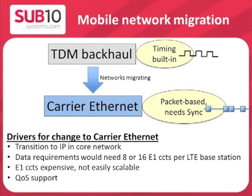There is a trend whereby TDM backhaul is migrating to carrier Ethernet. Traditionally, microwave backhaul used TDM circuits such as E1 or T1. These circuits carry a native clock signal along with the data, so timing is already available. Backhaul networks are now migrating away from these circuits to carrier Ethernet.